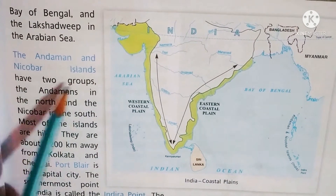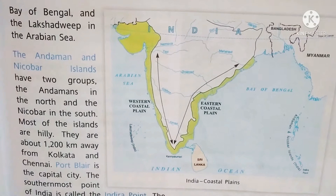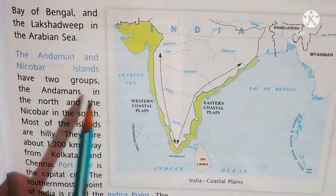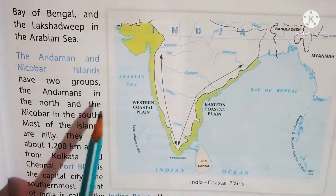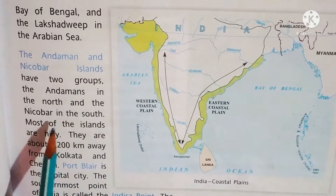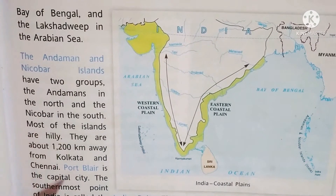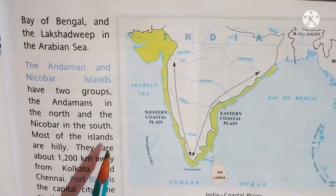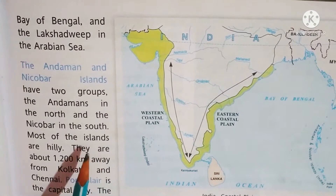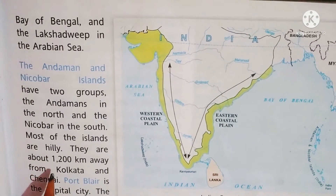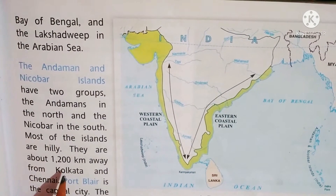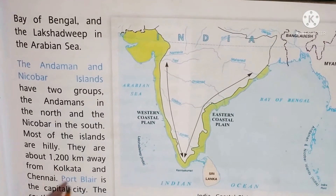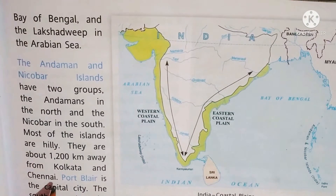The Andaman and Nicobar Islands have two groups: the Andaman in the north and the Nicobar in the south. Most of the islands are hilly. They are about 1,200 km away from Kolkata and Chennai.